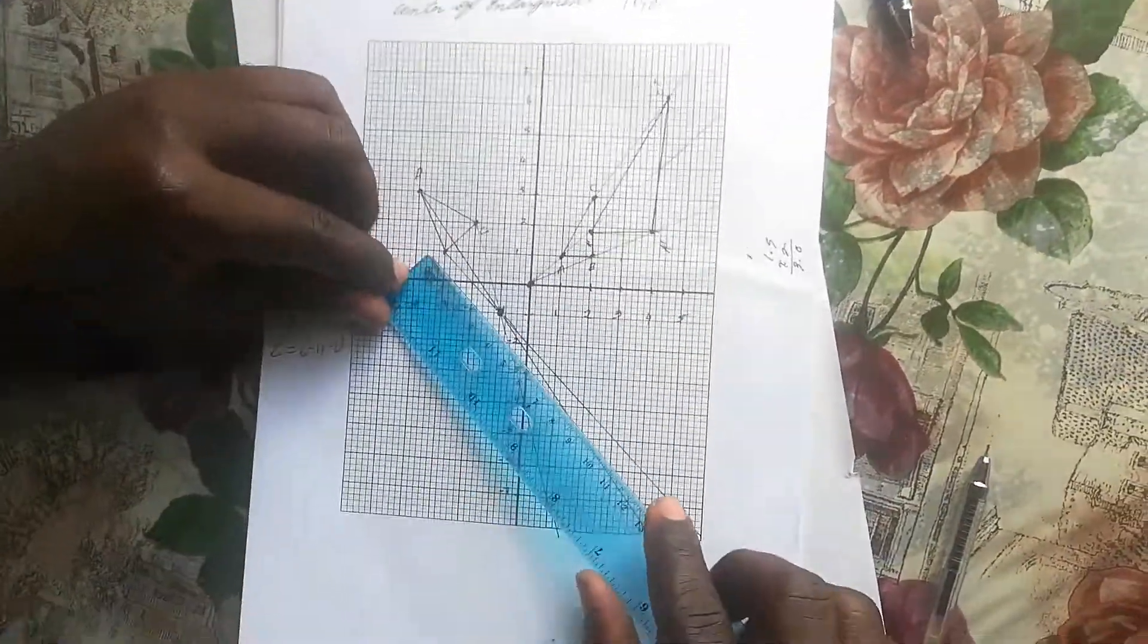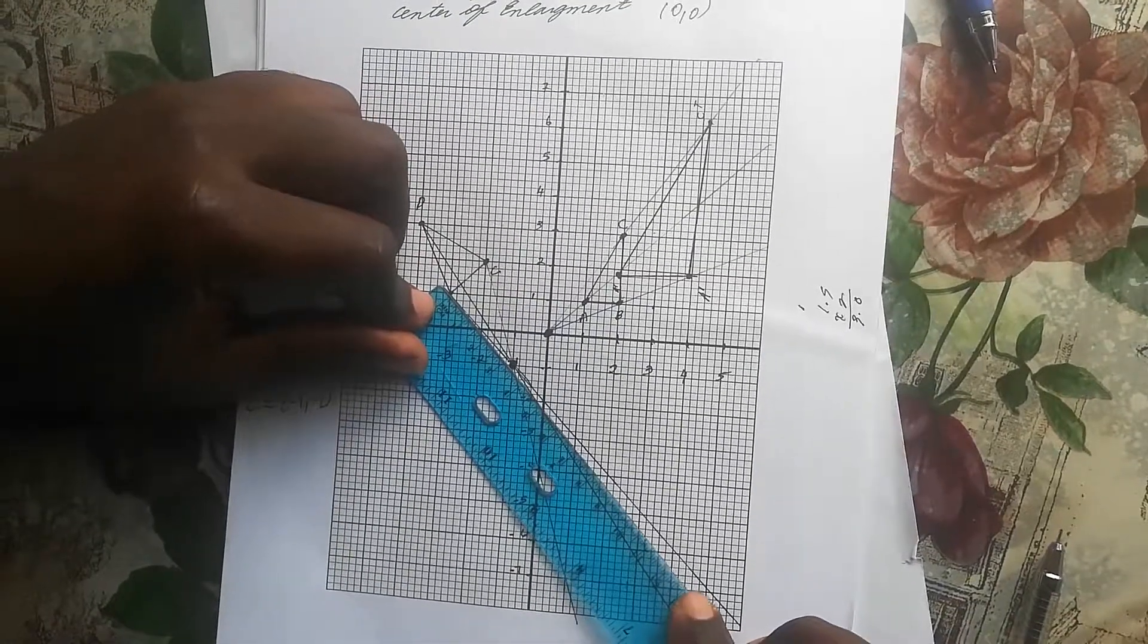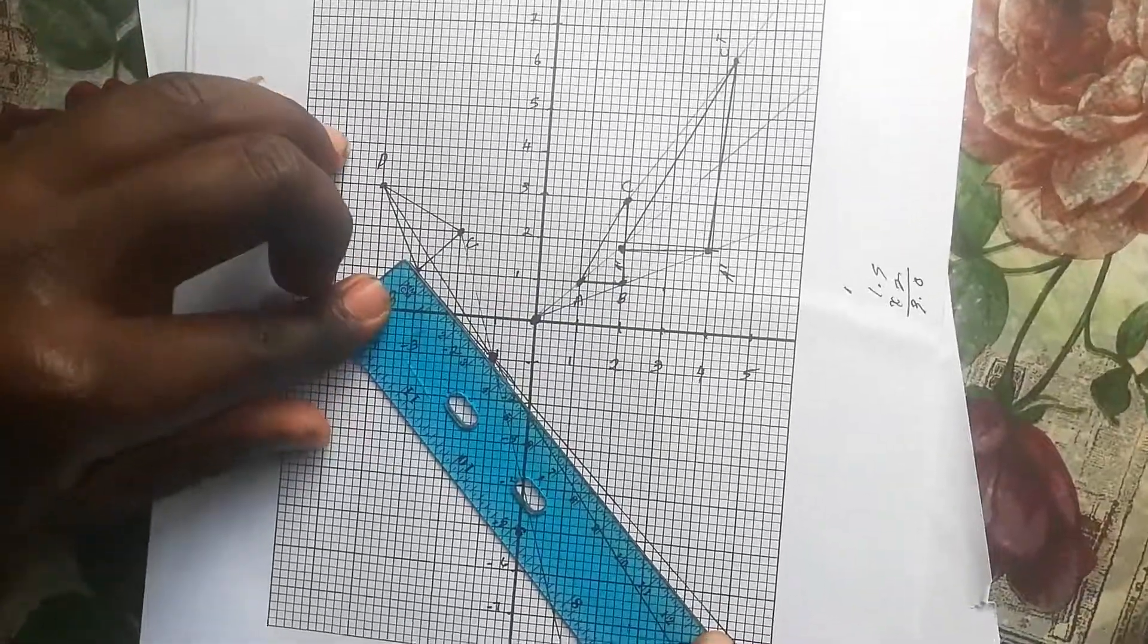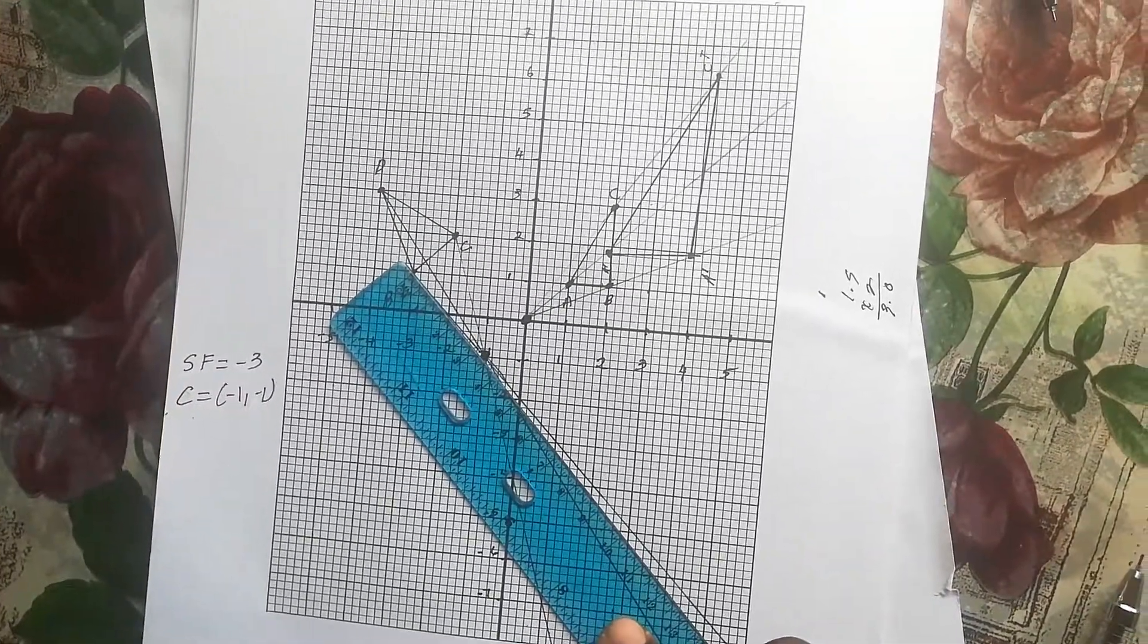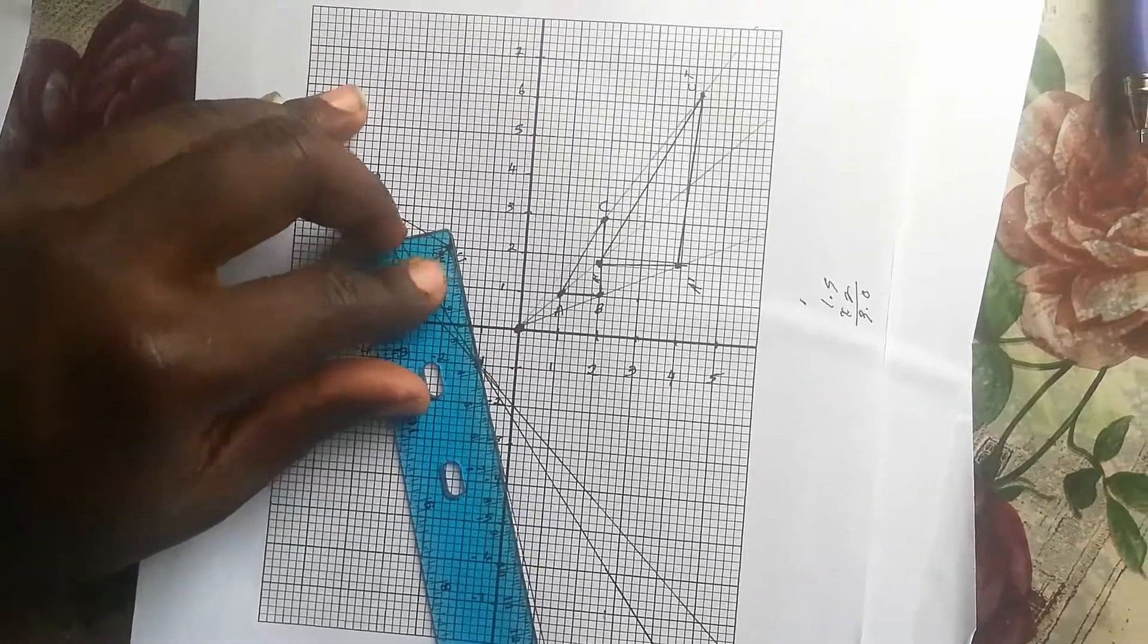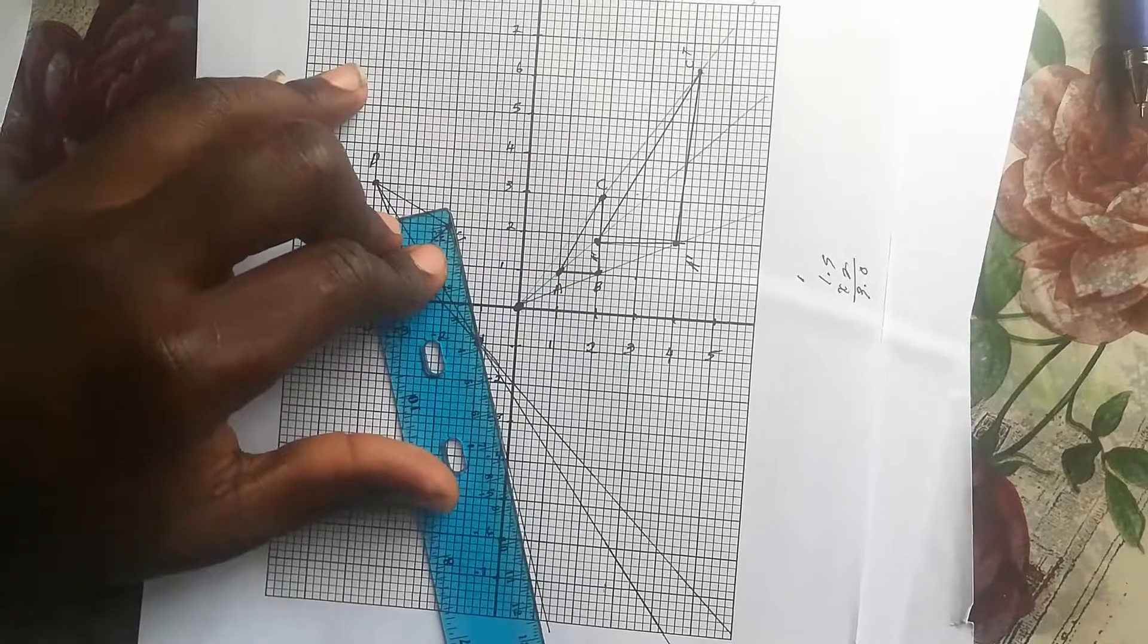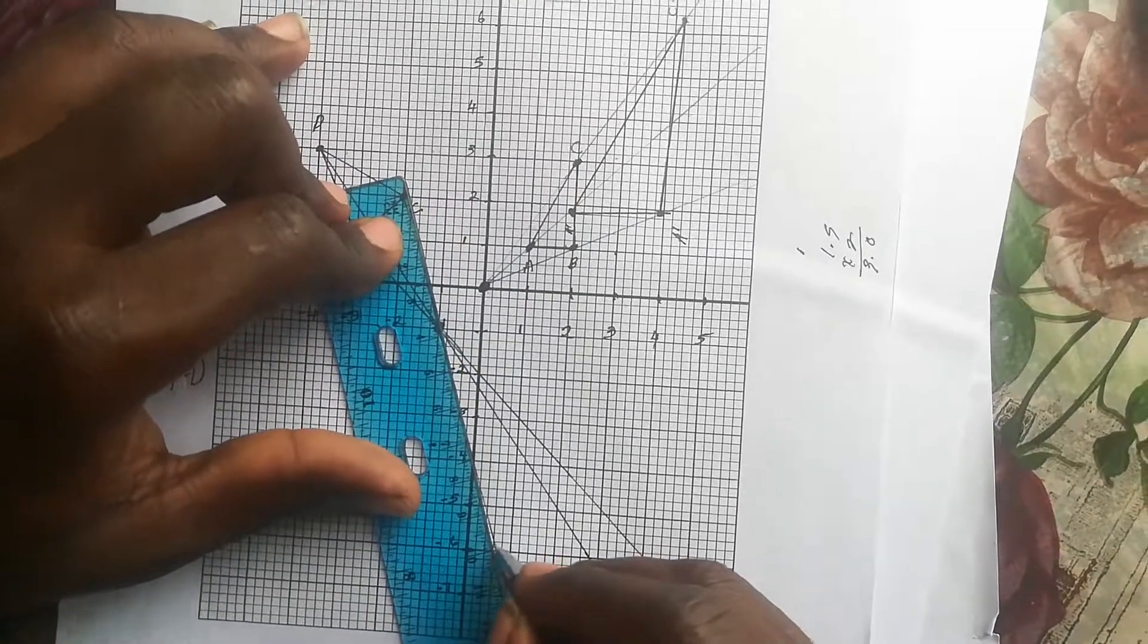We're going to measure the distance from our vertices through our center - this is 3.3 - and then multiply it by our scale factor which is 3. So 3.3 times 3 is 9.9, and on this line we measure 9.9, that's right here.